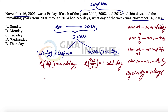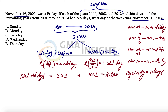We are considering three leap years. So the total odd days will be: three leap years with two odd days each, plus 10 normal years with one odd day each. That means total odd days = 3×2 + 10×1 = 6 + 10 = 16 days. But 16 is bigger than 7, so we divide 16 by 7, and the remainder is 2.